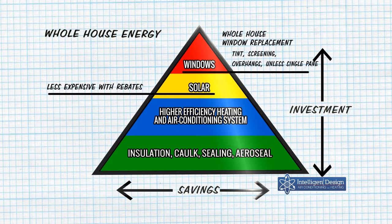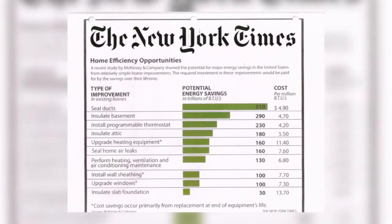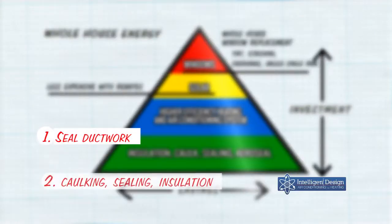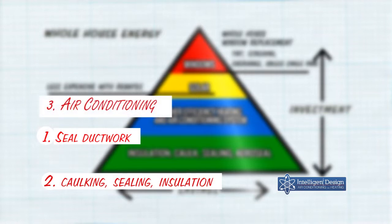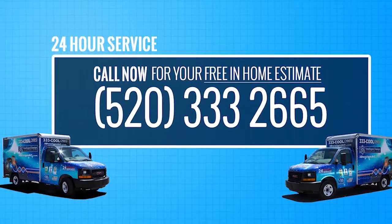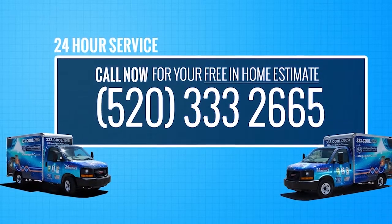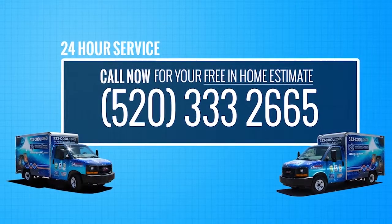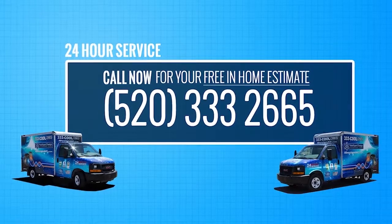We recommend addressing home efficiency in this order: nothing saves more on your energy bill than sealing your ductwork. After that, address caulking, sealing, and insulation. Then look at air conditioning efficiency. If you want to get rid of your bill altogether, we recommend solar. For windows, we only recommend tinting or screening unless you have single pane. Please call us now at 333-2665 so we can do a free in-home energy audit and find out where we can save you the most money for the least investment.